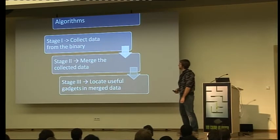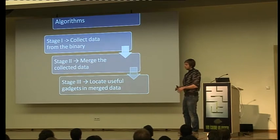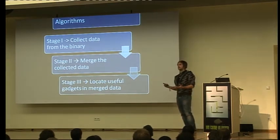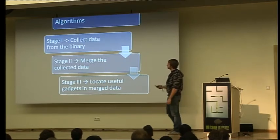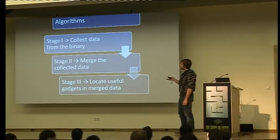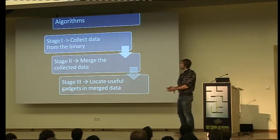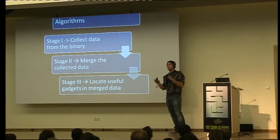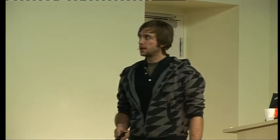After understanding the goal, we dive into the algorithms for extracting information from binaries. In stage one, we collect all necessary information from the binary to get semantic information of certain paths and their instructions. Then we merge the collected instruction and path data. Later, we use fuzzy tree matching to match fuzzy-defined semantic information with what we've extracted from the binary, to determine if an instruction sequence matches something we need for our programming.